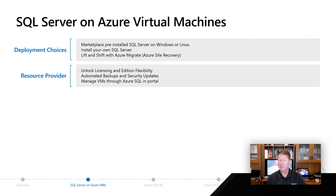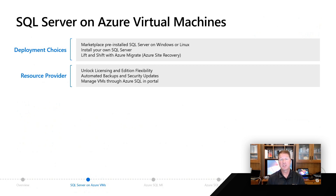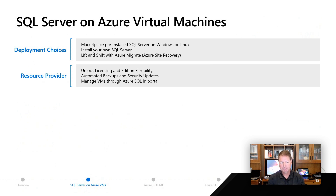Or you can just install it yourself — install the OS from the Marketplace and then bring your media up and install SQL Server inside the VM environment in Azure. Azure Migrate is also a great option because you can literally lift and shift the entire virtual machine VHD from VMware or Hyper-V right into Azure and start running right away.